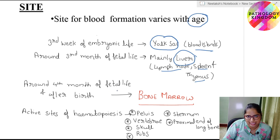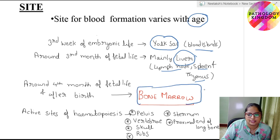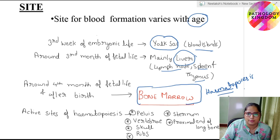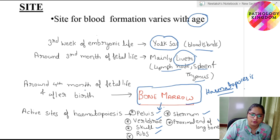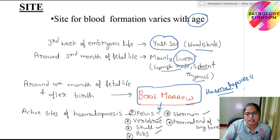Around four months of fetal life and after birth, the bone marrow is the main site of hematopoiesis — that is, formation of all blood cells. The active sites of hematopoiesis are the pelvis, vertebra, skull, ribs, sternum, and proximal end of long bones. These are the sites of bone marrow where hematopoiesis takes place from four months of fetal life and after birth.